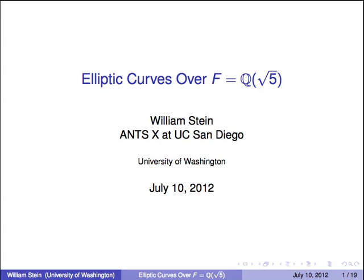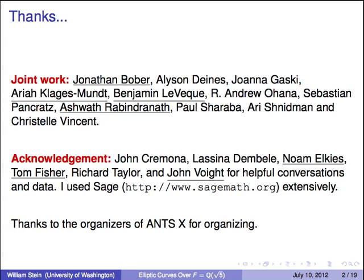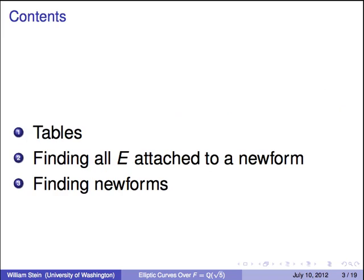So I'm interested in creating similar tables, but over number fields. And totally real number fields are a little bit easier to deal with than some other number fields from the point of view of enumerating elliptic curves. The first totally real number field is Q, the rational numbers, but John has already done a great job making enormous tables there. The next totally real number field after the rational numbers is Q adjoint square root of 5, if you order them by discriminant.